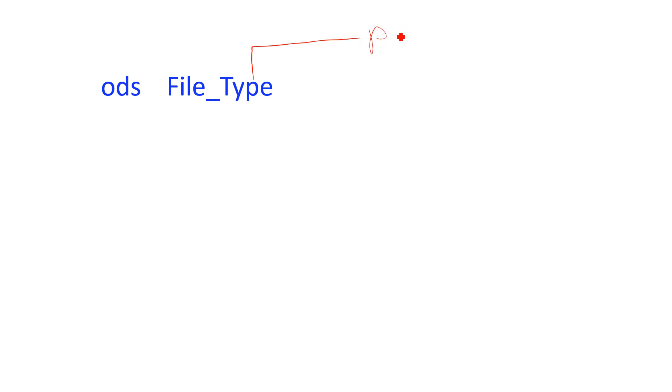I'm going to give you the simplest form of the syntax. You start with ODS, then provide the file type — meaning which format you want to produce the SAS output in. For example, if you want PDF you specify PDF; if you want Excel you can do that as well.